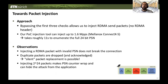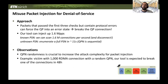Bypassing the first three checks allows us to inject RDMA send packets. We implemented a proof-of-concept tool that can inject up to 1.6 million packets per second, taking roughly 11 seconds to enumerate a full packet sequence number space. Injecting an invalid PSN does not break the connection — duplicate packets are dropped and acknowledged back to the sender. If we inject 2^24 packets, the PSN counter wraps around, hiding our injection from the application. We can also misuse packet injection for denial of service, since packets containing a protocol error can force the QP connection into an error state, allowing an off-path attacker to break existing QP connections.